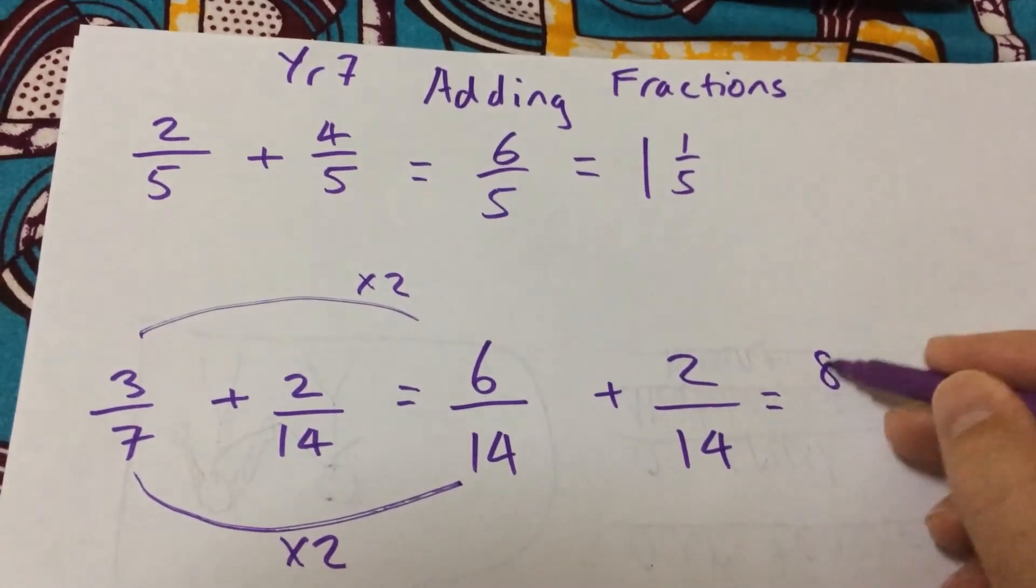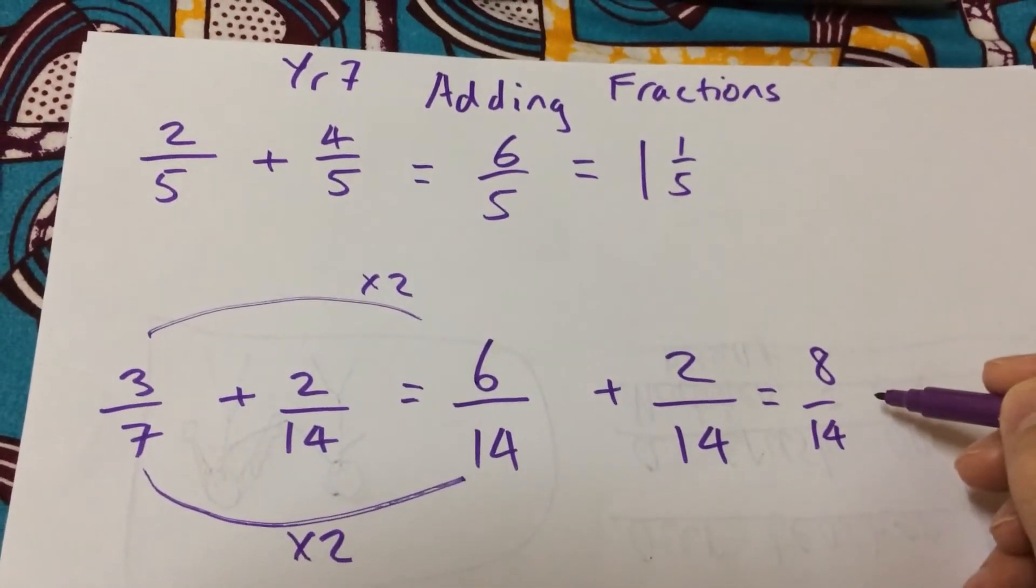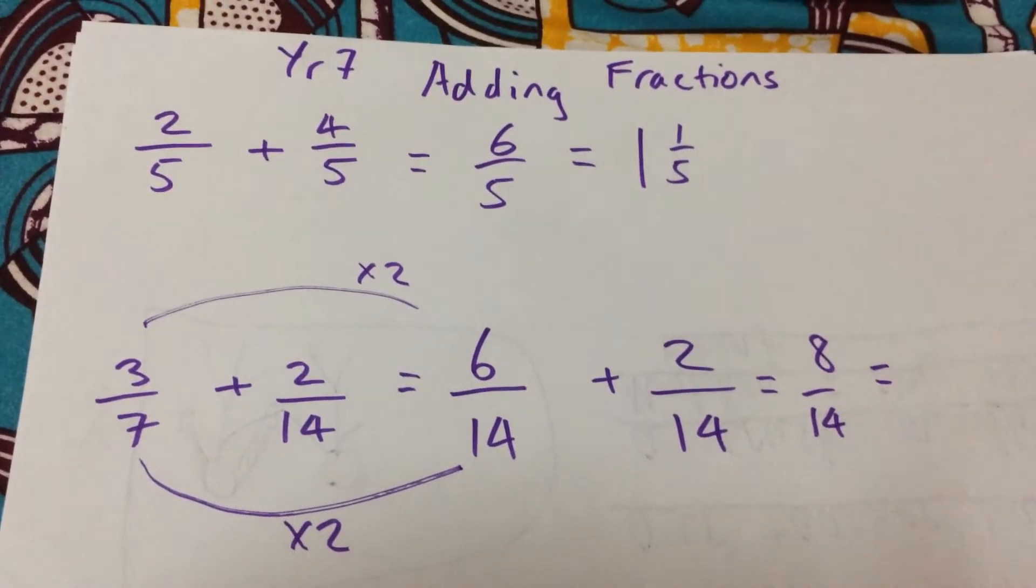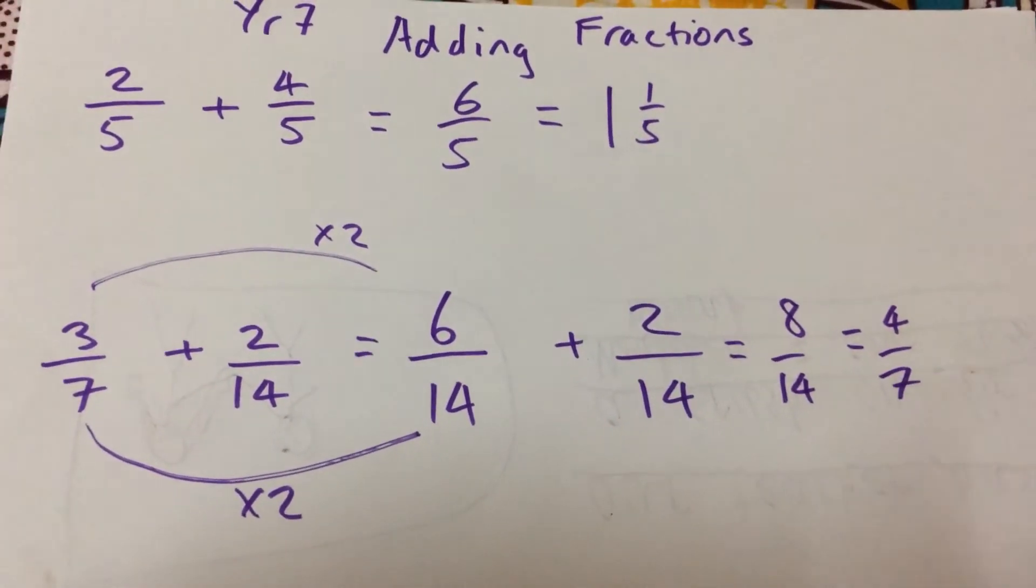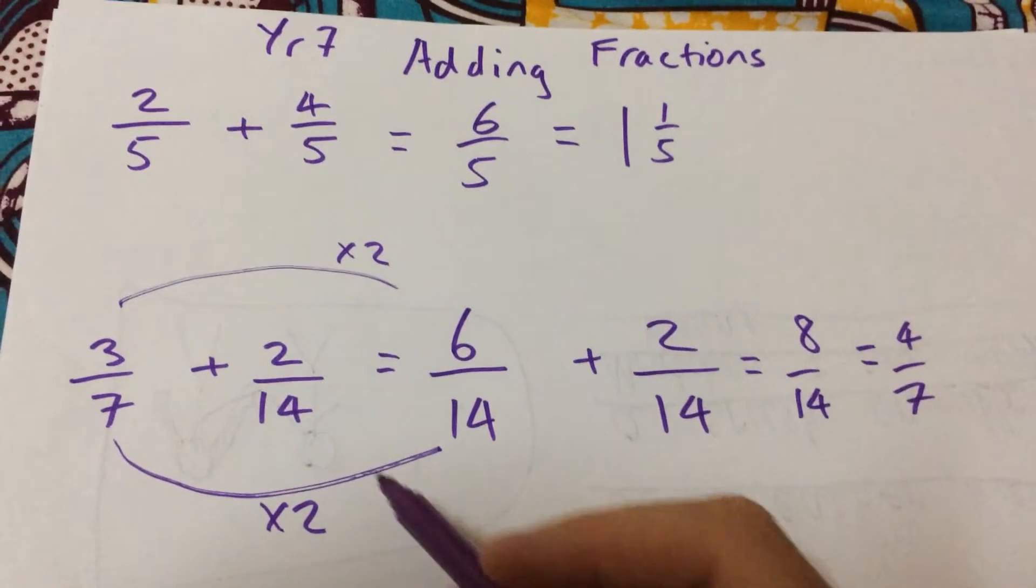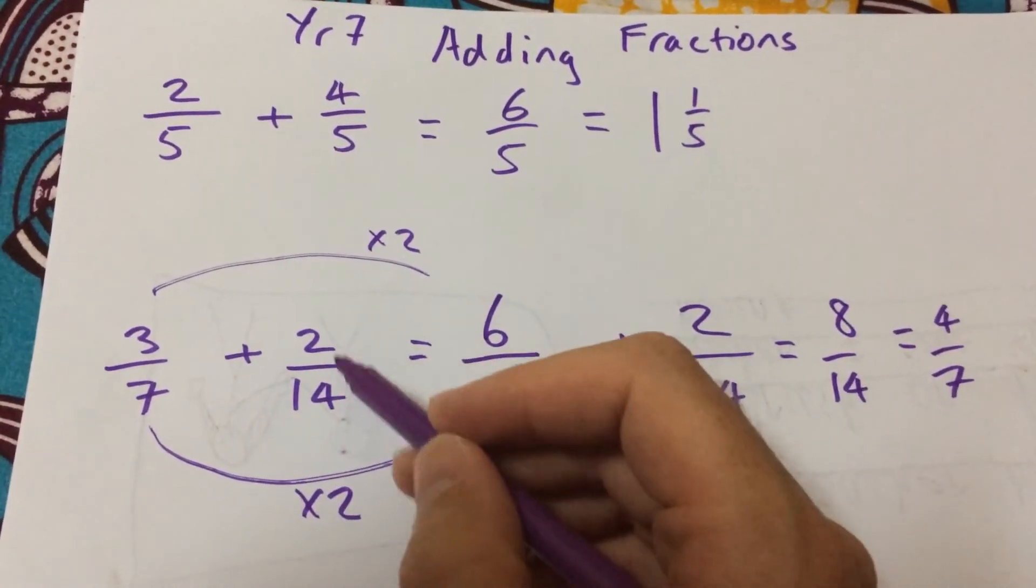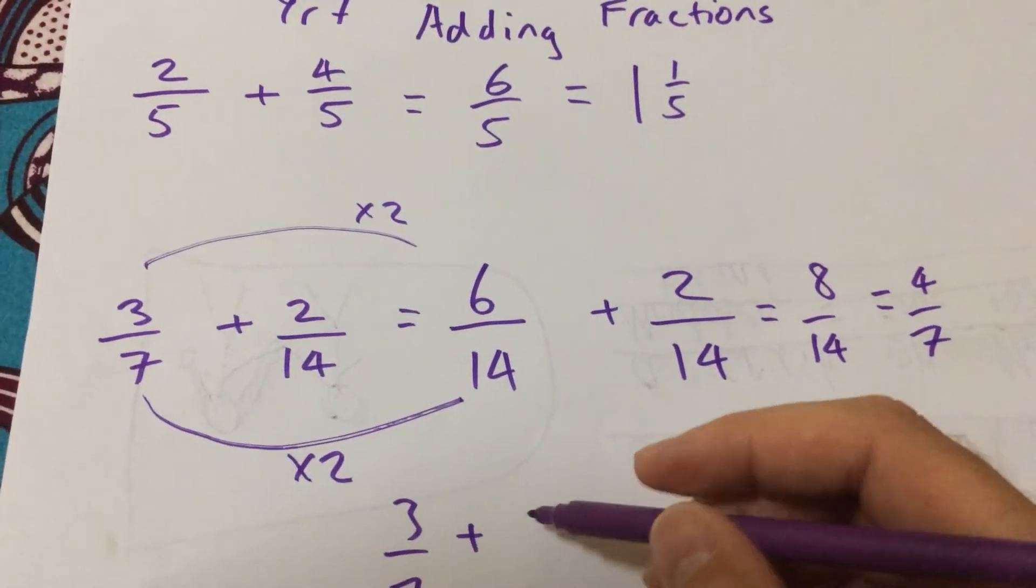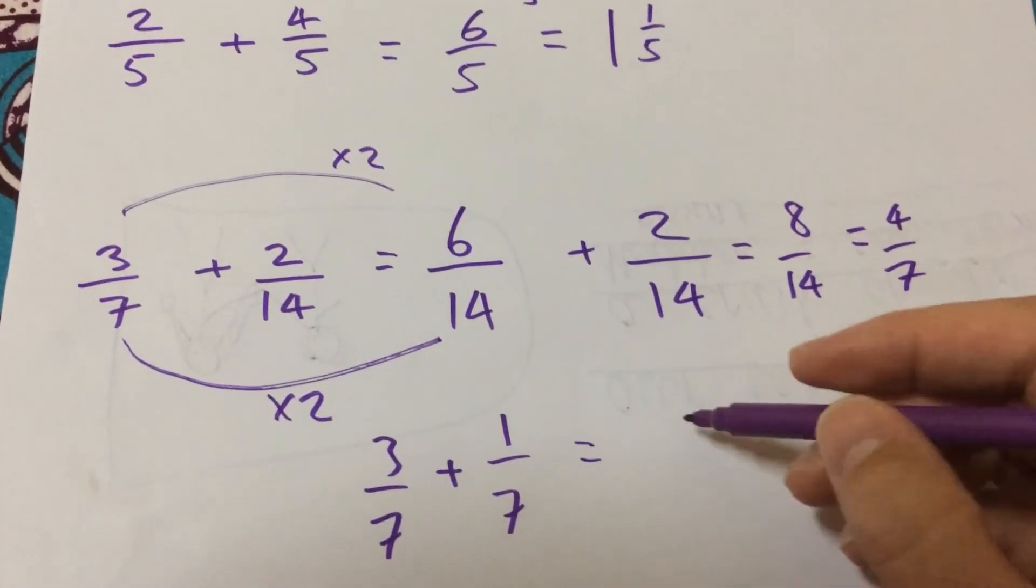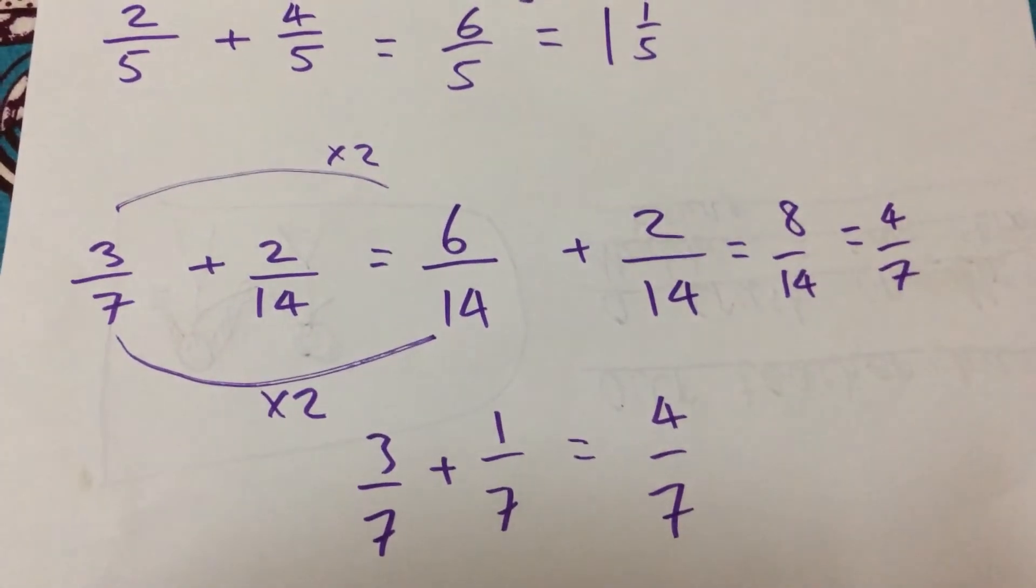And I'll then get eight fourteenths, which I can then even simplify back down to four sevenths. I could have done that another method by noticing that they're both even. So I could have three sevenths plus one seventh and got four sevenths.